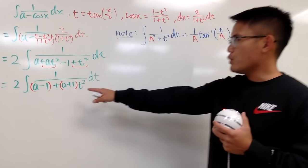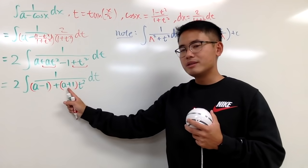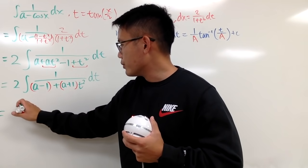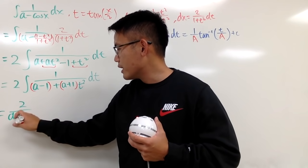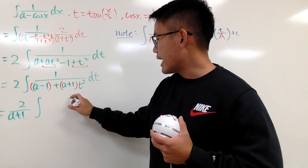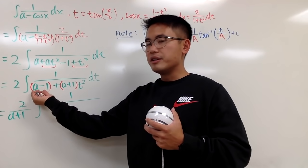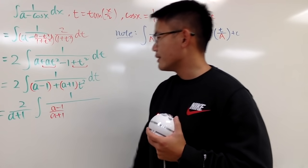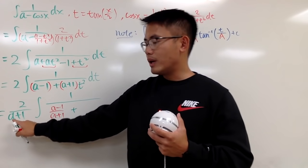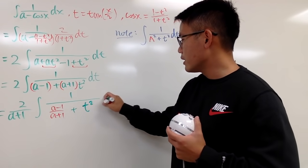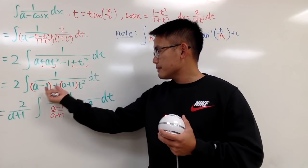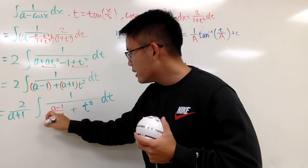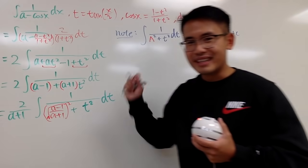To use that formula, I need to factor out (a + 1) from the denominator. So we get 2/(a + 1) times the integral of 1 over [(a - 1)/(a + 1) + t²] dt. To match the formula perfectly, I'll write (a - 1)/(a + 1) as a perfect square by taking its square root and squaring it.